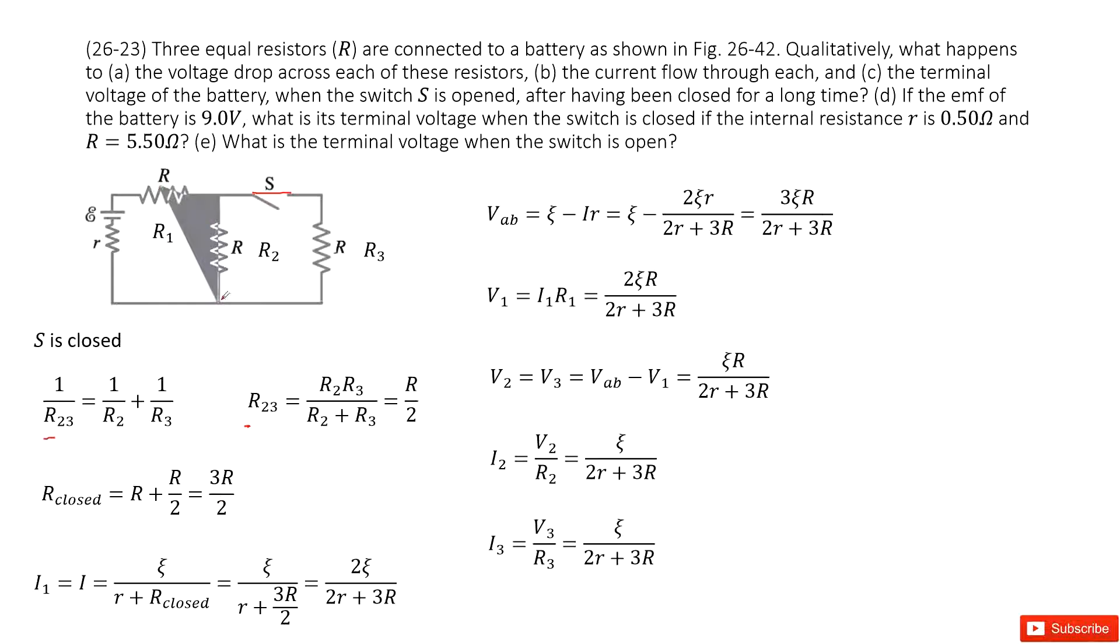Now we can see in this circuit, the current at the main branch and the current goes through the R1, this current equal to I1. So I1 equal to epsilon divided by the internal resistance R plus the R closed. Now we can see the terminal voltage for AB, VAB is epsilon minus I times R. So I times R, we input I inside and we can get finally it look like this one.